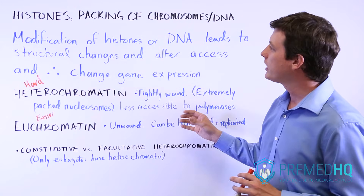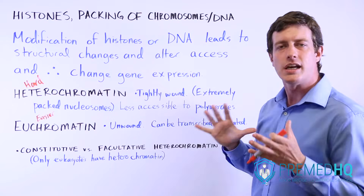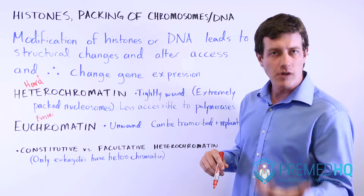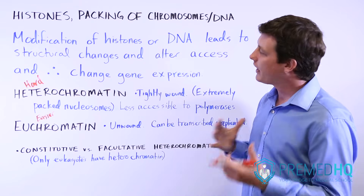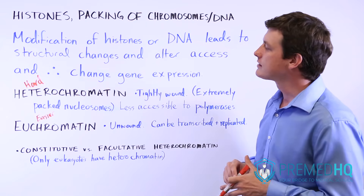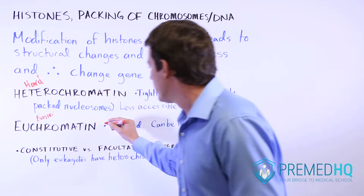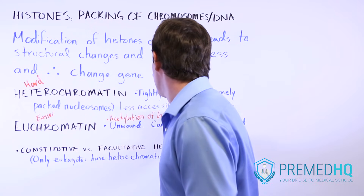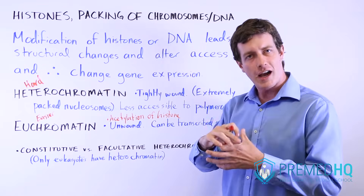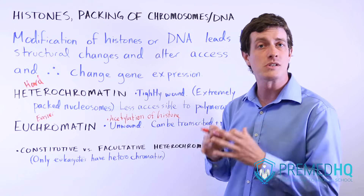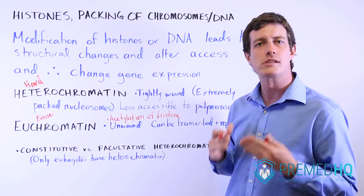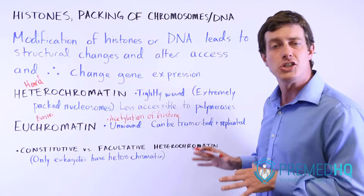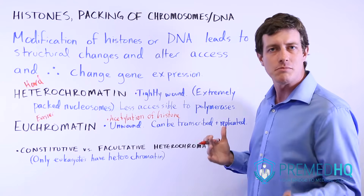If you can control the degree to which DNA is wound or unwound, that allows you to control the expression of that DNA, be it by replication or by transcription. There are various factors that allow control over that process. Things that favor euchromatin — the unwinding — include acetylation of histones. If you add an acetyl group to a histone, that makes it less tightly wound, loosening the interactions between the DNA and the histones, and between the histones and each other. This allows more polymerases access, so acetylation favors euchromatin and thus favors the gene being transcribed and expressed as proteins.